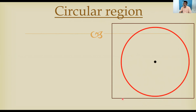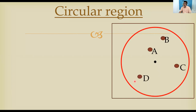This square shape shown here is called a plane surface. In this plane surface, a circle is drawn with center O. Now point A is inside the circle, B is also inside, C is also inside, D is also inside. All of A, B, C, D belong to the interior part of the circle.